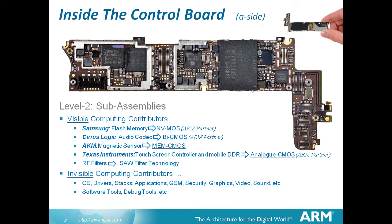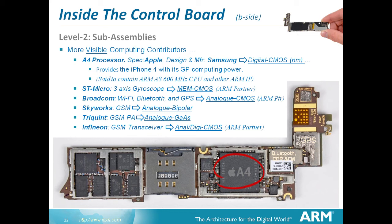Inside the control board, just look at the number of chips and different technologies: non-volatile MOS, bi-CMOS, memory MOS, analog MOS, SAW filters. There's invisible stuff too — OSs, drivers, stacks, applications, GSM, security, graphics — a lot of stuff both visible and invisible. It's packed onto a wonderful double-sided multi-layer printed circuit board. We've got gyroscopes in there, GPS which is analog CMOS — so a lot of electronic technologies across many different process types.